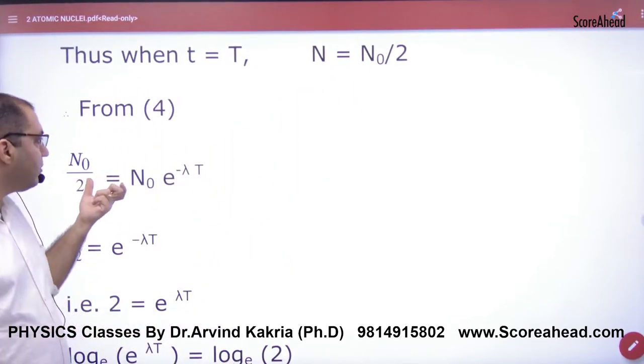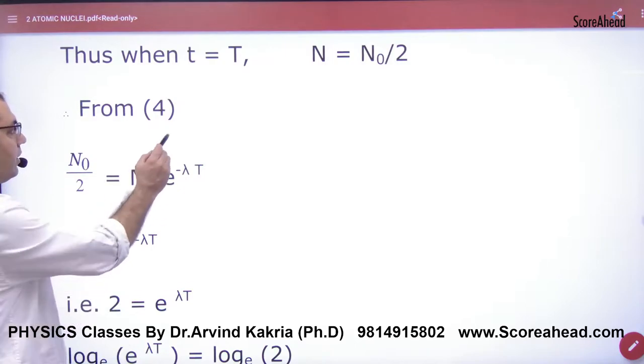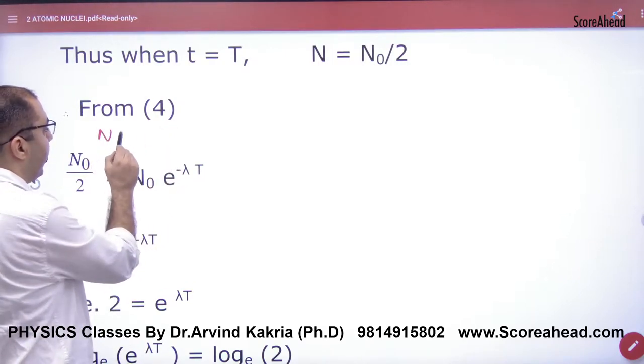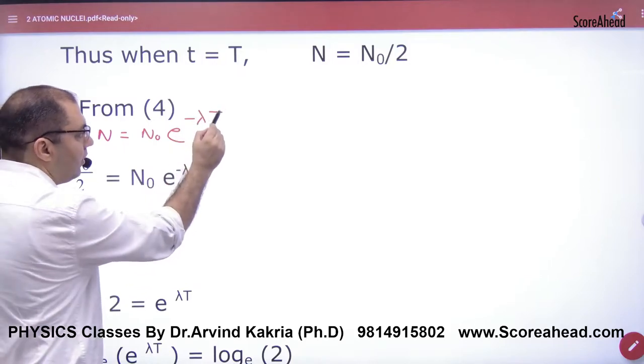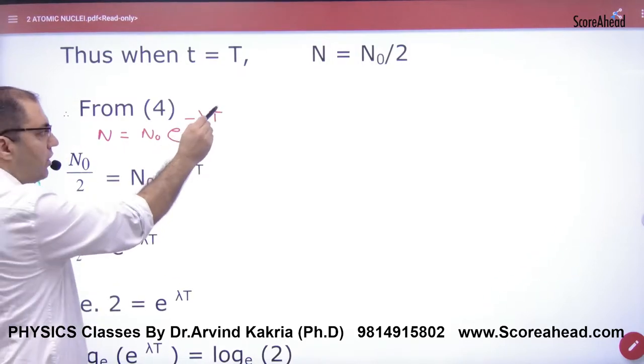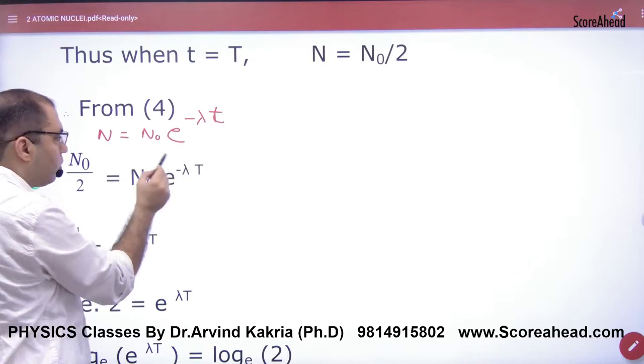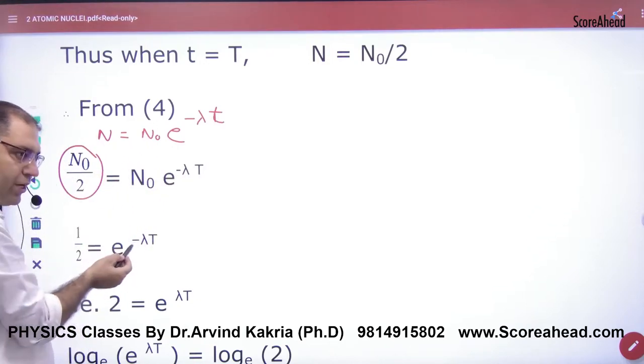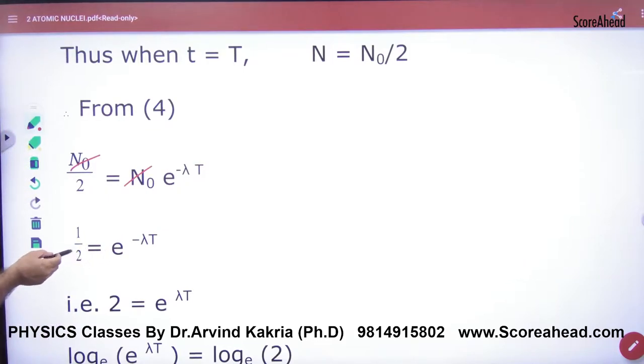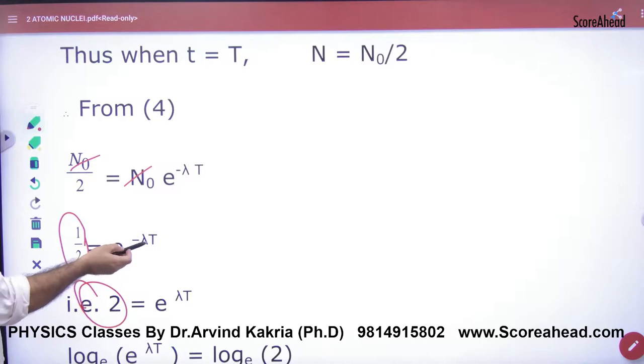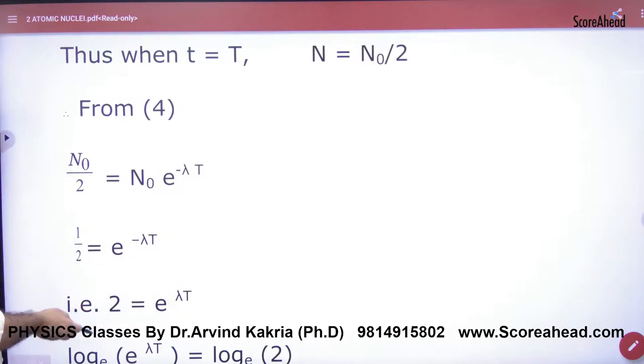So in this result, what was the result? N is equal to N0 e raised to power minus lambda t. So if you put here T, capital T, what will we put here? N0 by 2. So here N0 from N0 cancel. So if we take this half to the other side, this is 2, and the minus becomes plus.